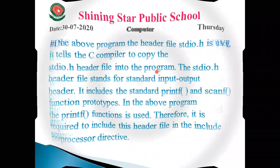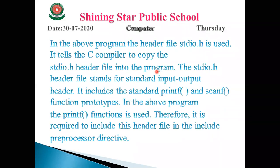When the compiler starts the preprocessor directives, it searches for the header files. It checks the header file and then checks all the functions of that header file which we can use in the source program. The C compiler copies this header file to the source program. We use stdio.h because it tells the compiler to copy the stdio.h header file into the program. stdio.h stands for input/output operations.